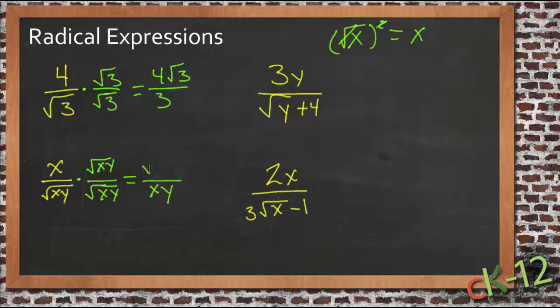And then in the numerator we have x times the square root of xy. Now we have an x in the numerator and an x in the denominator, so they'll cancel. So our final answer is just the square root of xy over y.